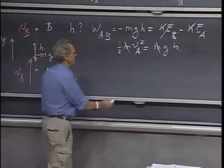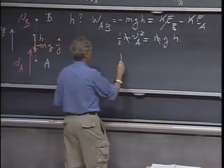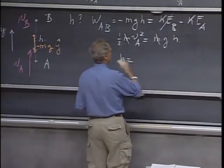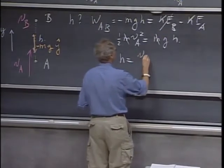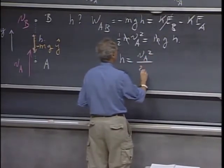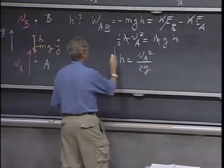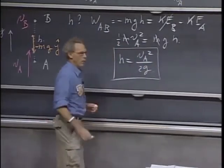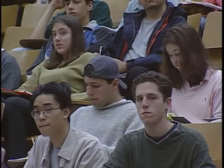m cancels. And so you'll find that the height that you reach equals vA squared divided by 2g. And this is something we have seen before. It was easy for us to derive it in the past, but now we've done it purely based on energy considerations.